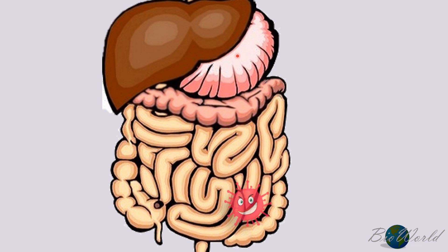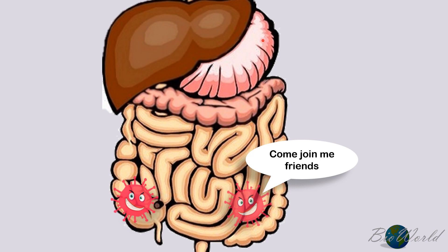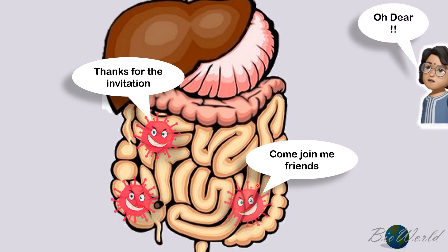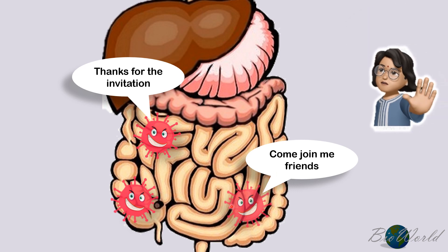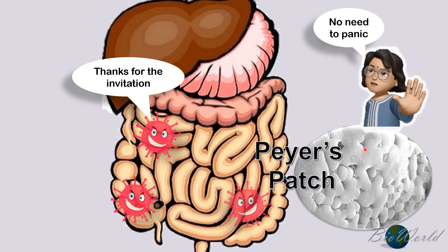Once the pathogen successfully enters the digestive system, it will enter the stomach where hydrochloric acids may destroy some of the pathogens. However, a large amount of these pathogens may begin to occupy the intestine. Our immune system is prepared — the next lymphatic organ is located in the small intestine. This is known as the Peyer's patch, which can filter the antigens in the small intestine.